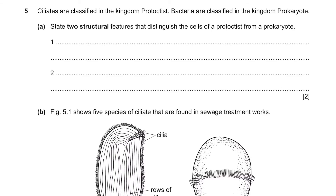Question 5. Ciliates are classified in the kingdom Protoctista. Bacteria are classified in the kingdom Prokaryota. Part A asks for two structural features that distinguish the cells of a protoctist from a prokaryote. Protoctists, like algae, have a nucleus — unlike bacteria, the prokaryotes. They also have linear chromosomes, whereas prokaryotes have genetic material that floats around the cytoplasm.